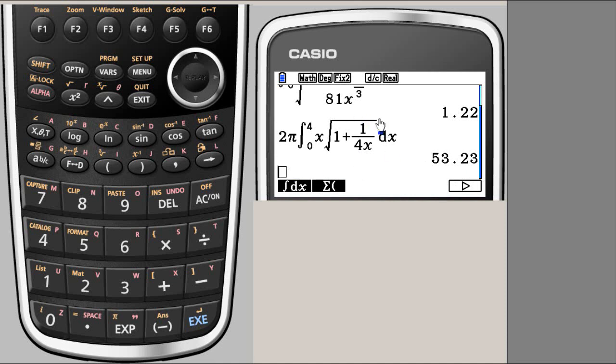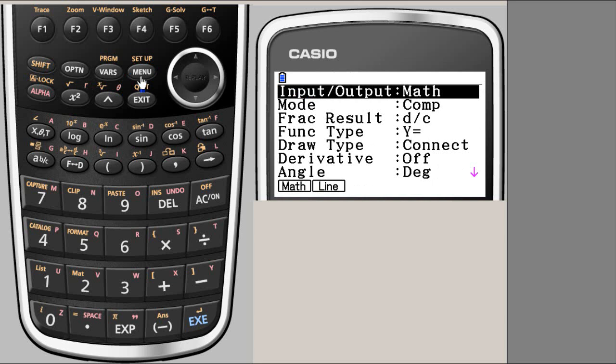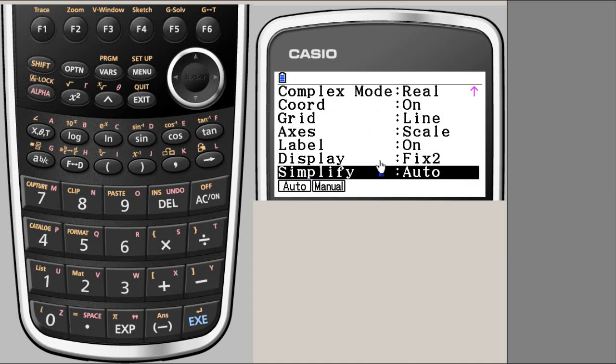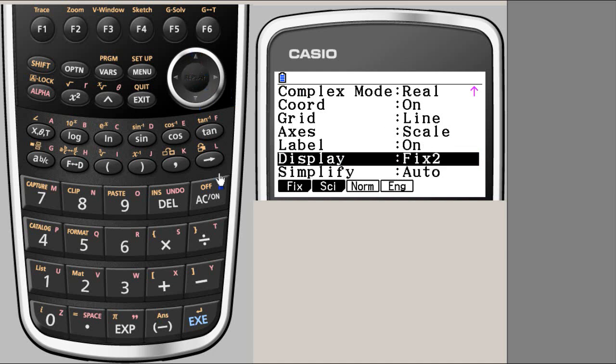The digits are controlled in the original shift setup. We go in the reverse direction. Here, display fix two digits - we want more digits.